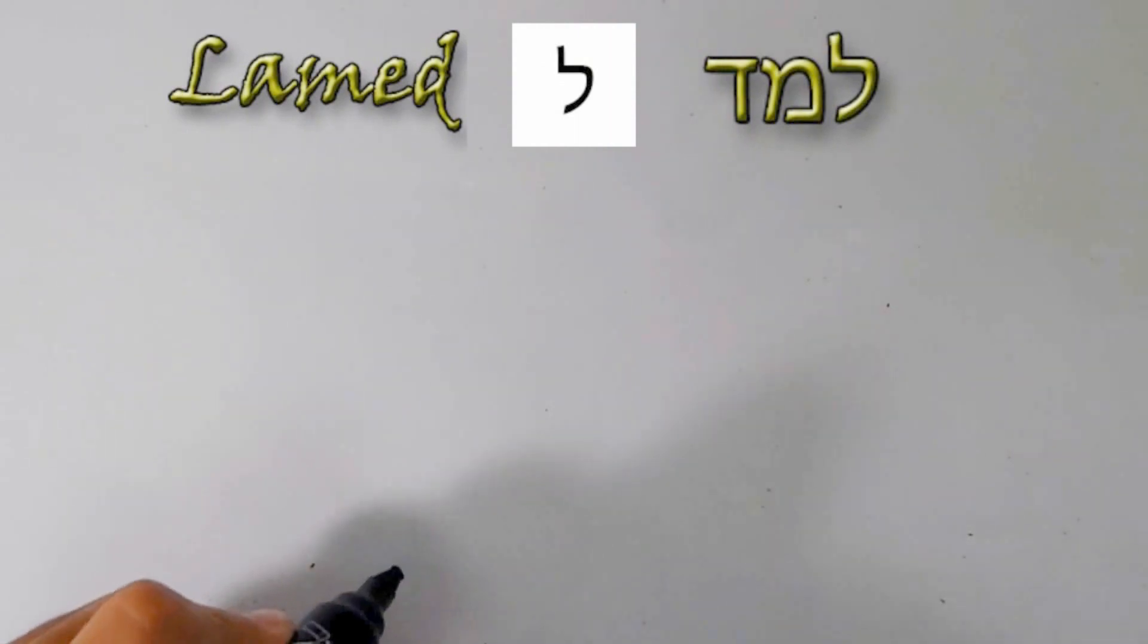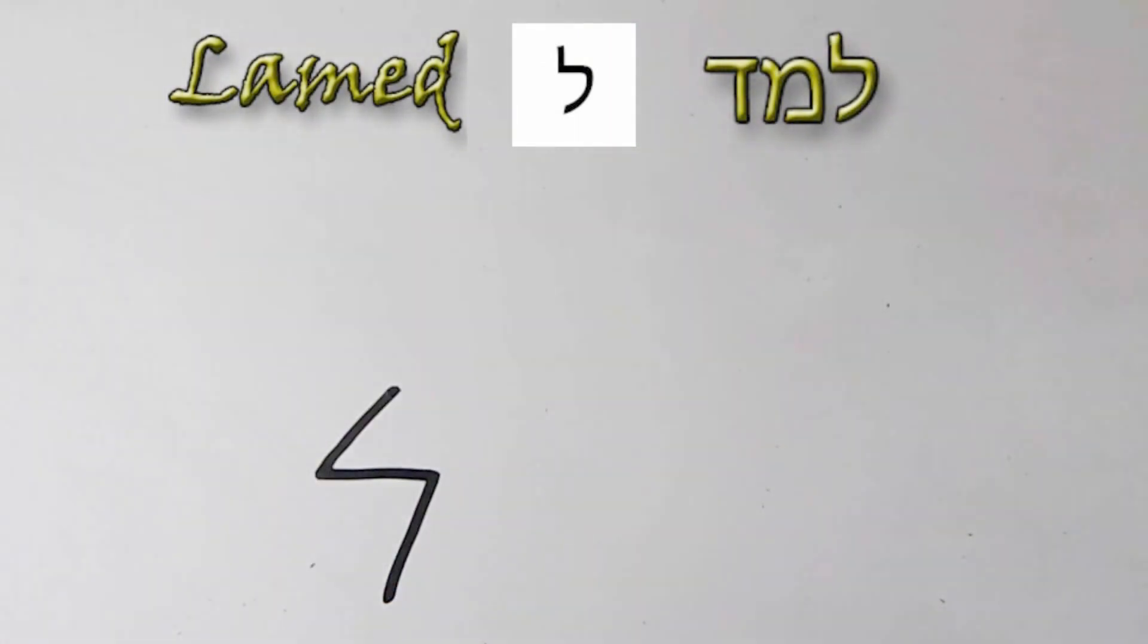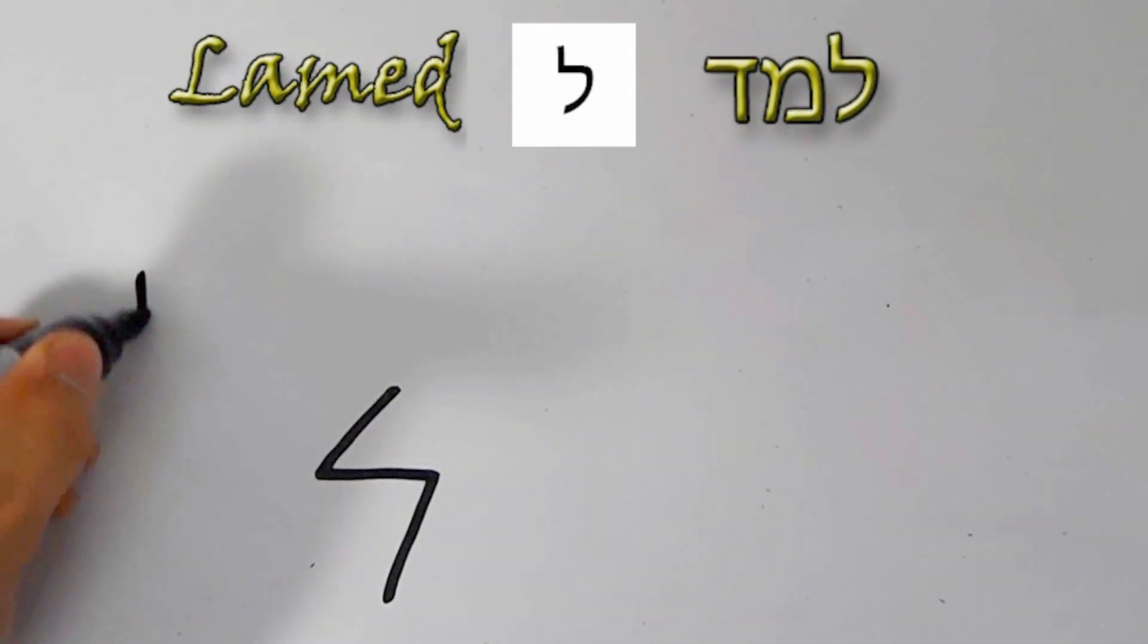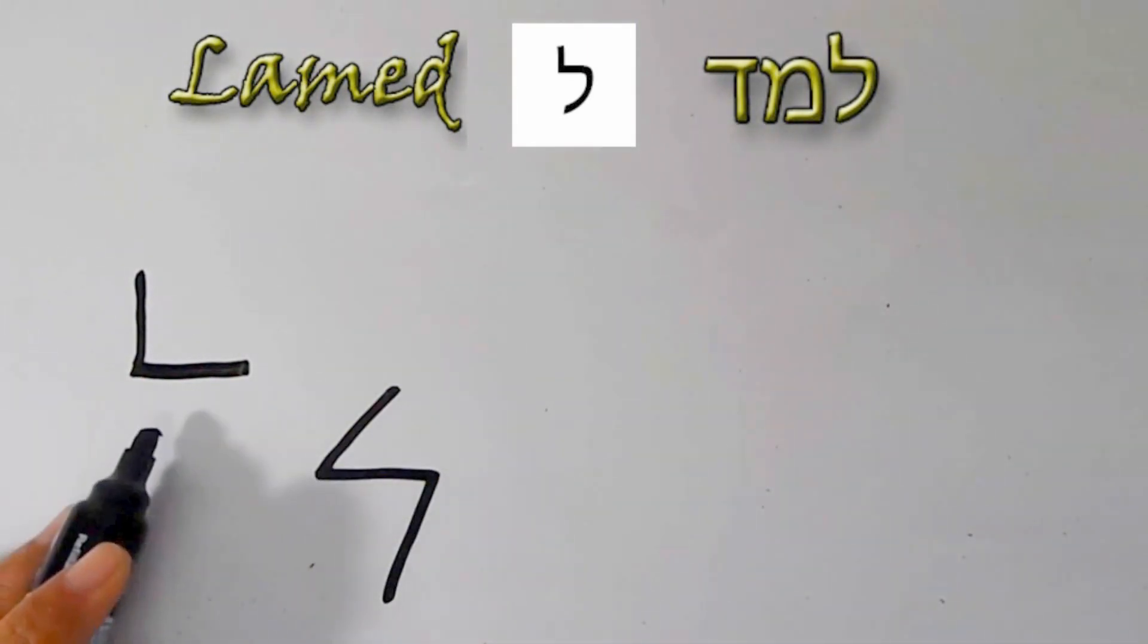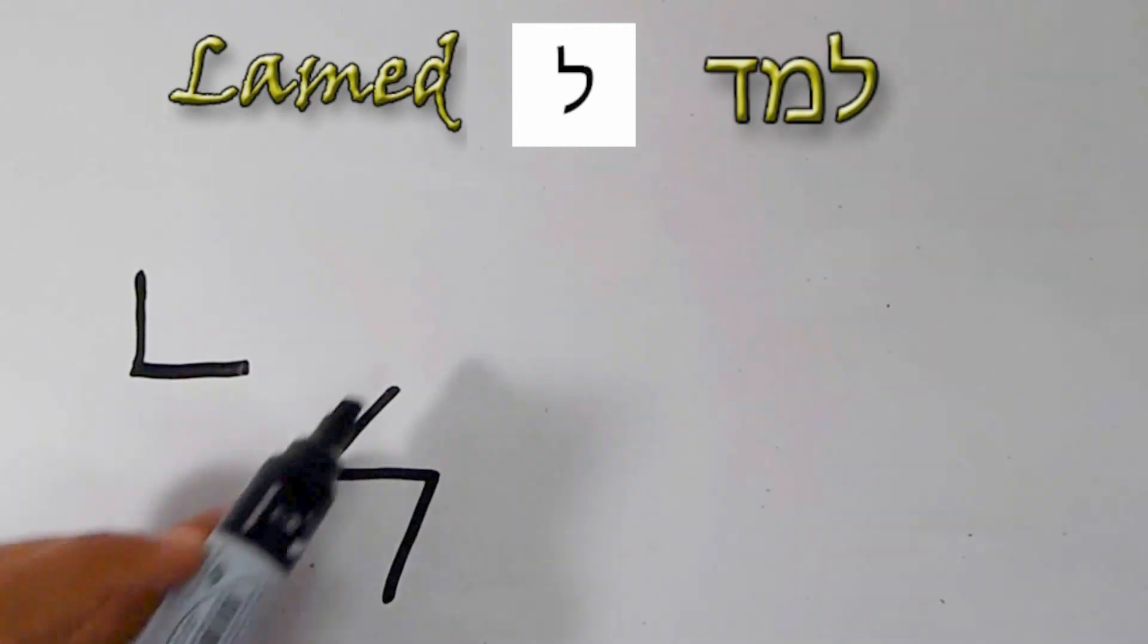Next is Lamid. Lamid. There's L. Lamid. Also very easy to write it down.